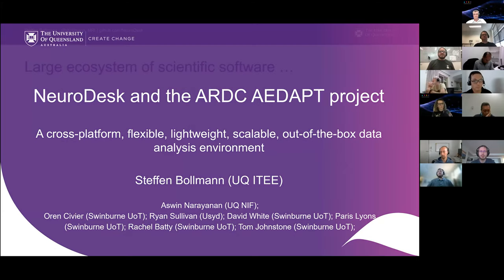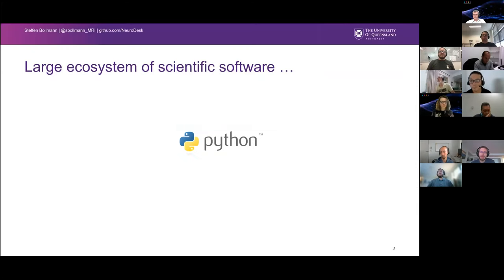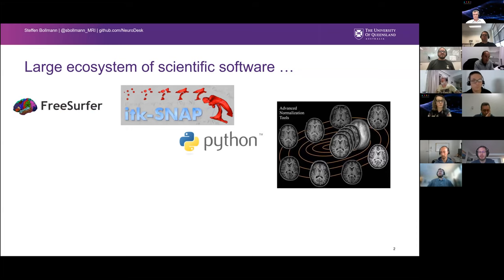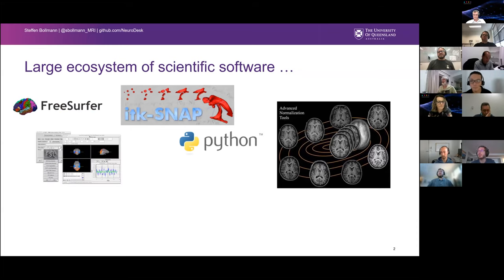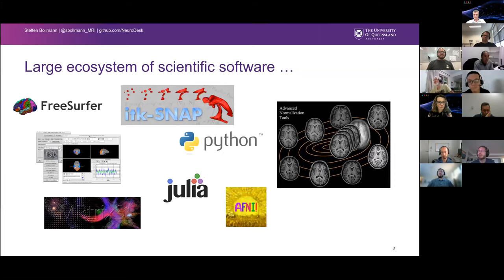First, why we're doing this, actually. So in our field, in neuroimaging, we have a huge bunch of scientific software. It's usually written by scientists, which means they're not software developers, and it's difficult to run the software. And why is this the case?